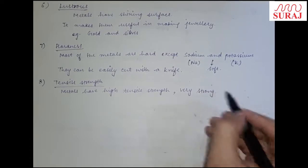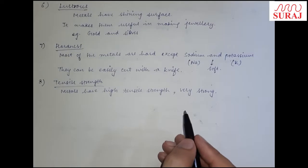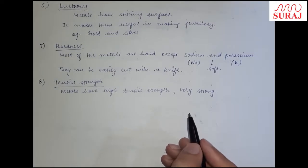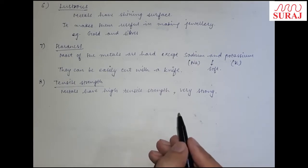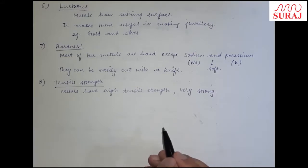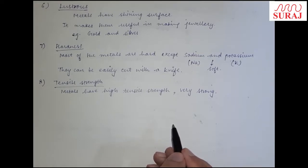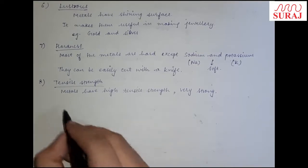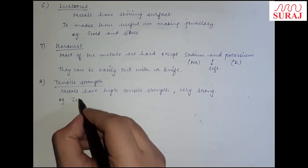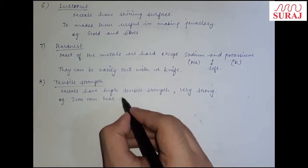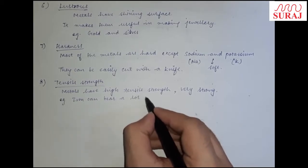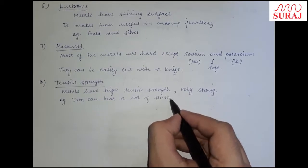Tensile strength का simple मतलब है कि metals बहुत सारे stress bear कर सकते हैं, वो easily तूटते नहीं। कितना भी weight, stress, या force apply करो — लेकिन वो न तूटे, उसे high tensile strength कहते हैं। Example: iron can bear a lot of stress, so iron की tensile strength high है।